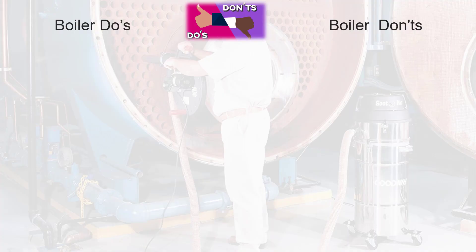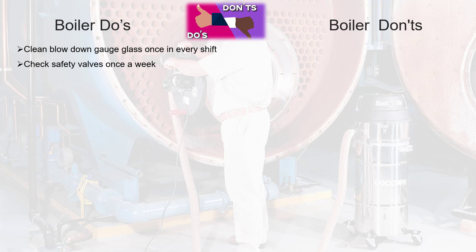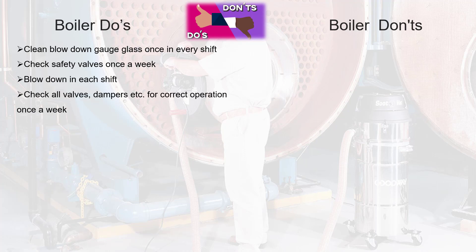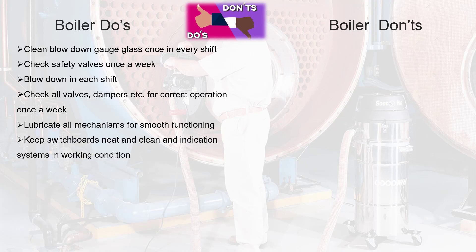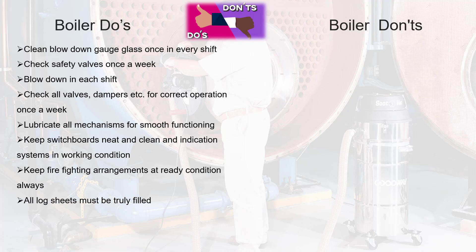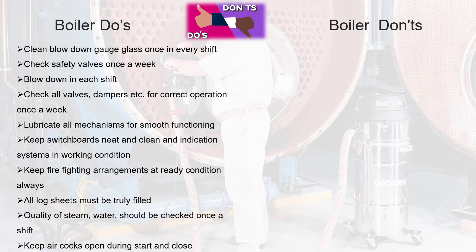Boiler DOs: clean blowdown gauge glass once every shift. Check safety valves once a week. Blowdown each shift. Check all valves, dampers, etc. for correct operation once a week. Lubricate all mechanisms for smooth functioning. Keep switchboards neat and clean and indication systems in working condition. Keep fire fighting arrangements at ready condition always. All log sheets must be truly filled. The quality of steam and water should be checked once a shift. Keep air cocks open during start and close.